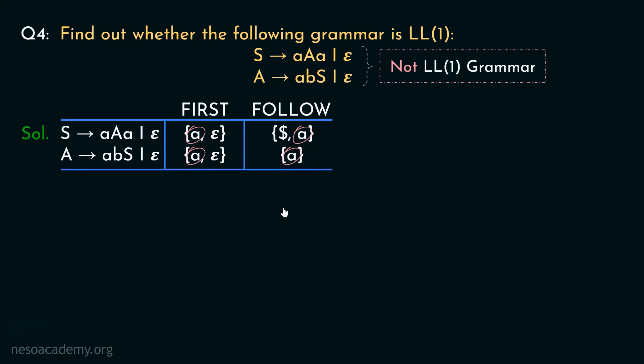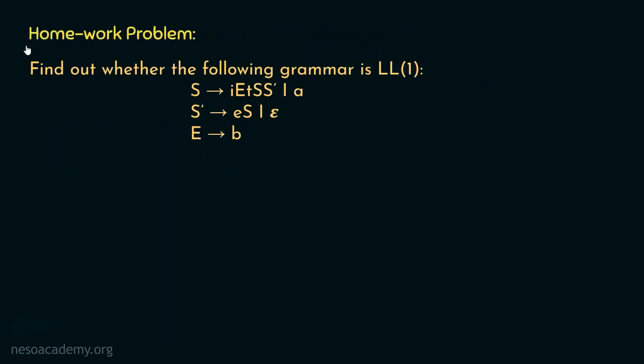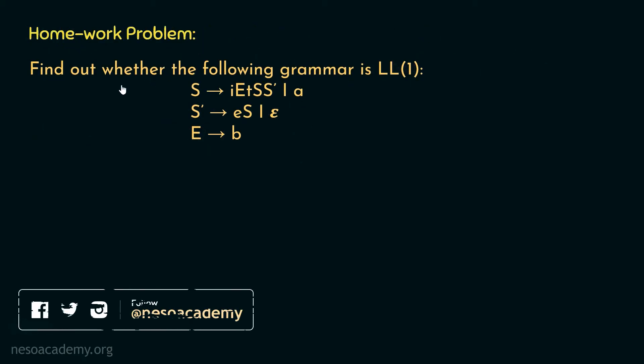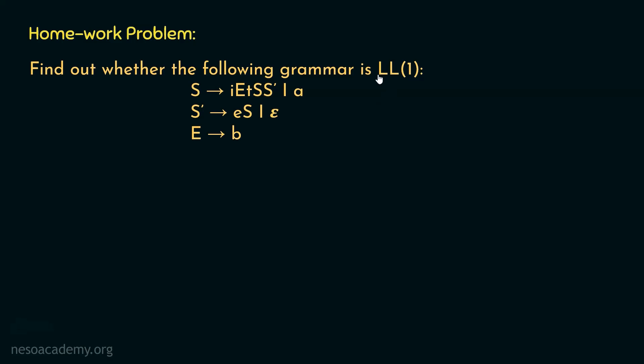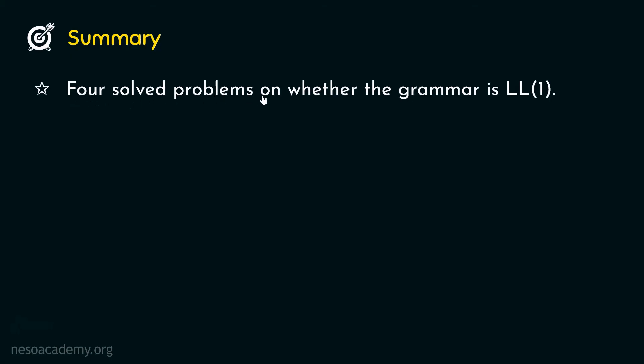With this, we are done with all the problems. Today I also have one homework problem: find out whether the given grammar with three non-terminals is LL1 or not. Find the firsts and follows of all non-terminals, then construct the LL1 parsing table. In this session, we observed four solved problems on whether a grammar is LL1. This brings us to the end of Chapter 3 of the Compiler Design course. From the next session onwards, we will begin learning about bottom-up parsers. Thank you all for watching.